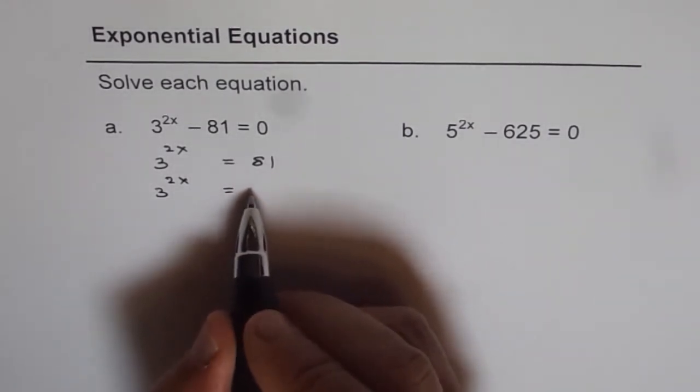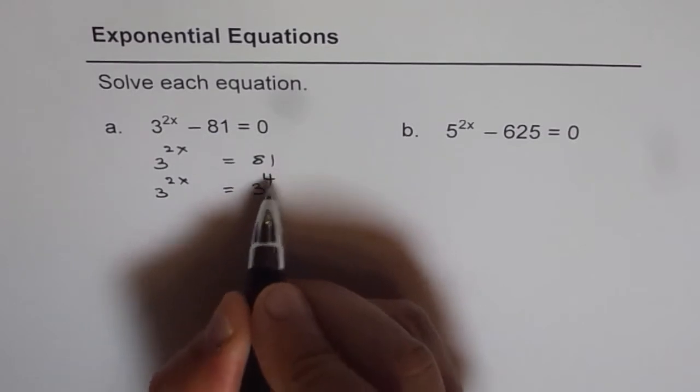So 81 is what? 3 times 3 is 9, and 9 times 9 is 81. So 3 to the power of 4 is 81.